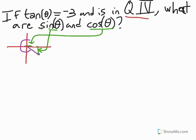Now, what we're given is tangent instead. Tangent of theta is negative 3. But we also know that tangent is opposite over adjacent, or in this case, opposite over adjacent. In other words, sine of theta over cosine of theta.